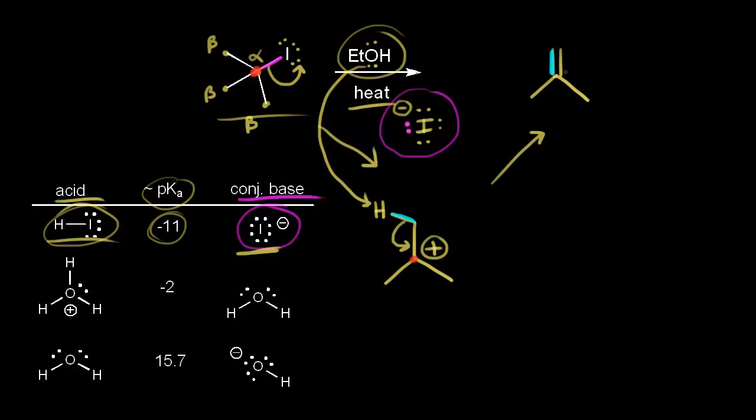A key point: when looking at SN1 mechanisms, the first step is also loss of a leaving group to form a carbocation. When you get to that carbocation, you might ask why ethanol is acting as a base rather than a nucleophile. The answer is that ethanol certainly can act as a nucleophile and attack the positively charged carbon, giving a substitution product via an SN1 mechanism. If ethanol acts as a base, you get an E1 elimination mechanism. Here we'll focus on the elimination product; the competition will be discussed in a later video.